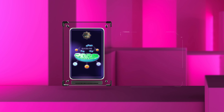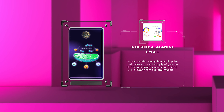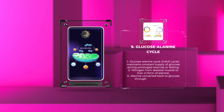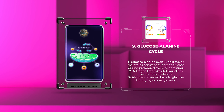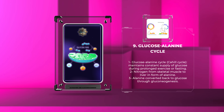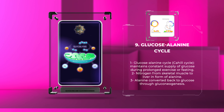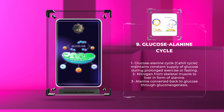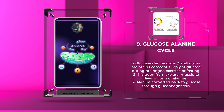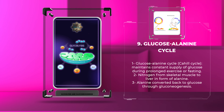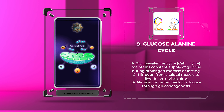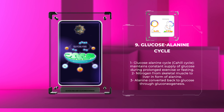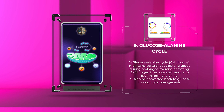The glucose-alanine cycle, also known as the Cahill cycle, is critical for maintaining a constant supply of glucose during prolonged exercise or fasting conditions. This metabolic pathway involves the shuttling of nitrogen from skeletal muscle to the liver in the form of alanine, which is then converted back to glucose through gluconeogenesis.